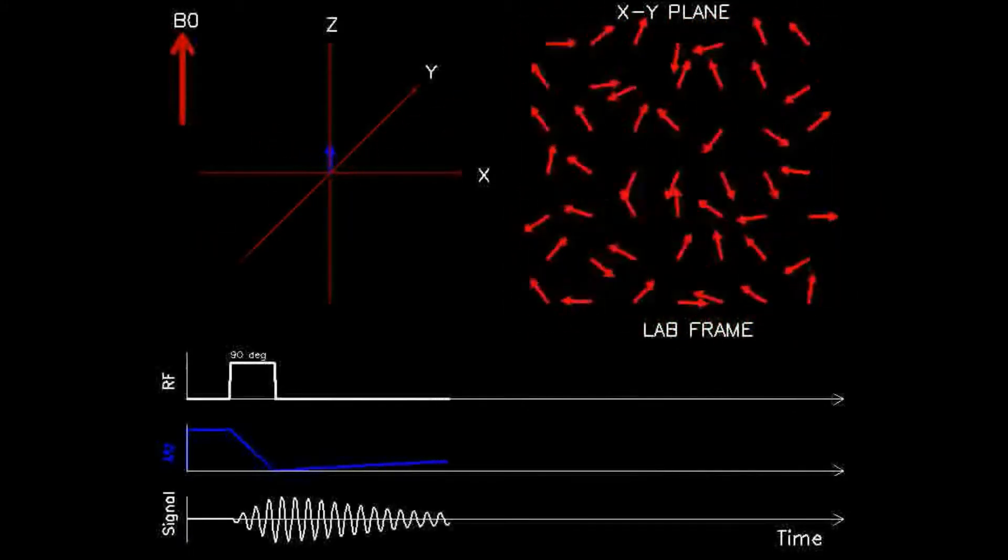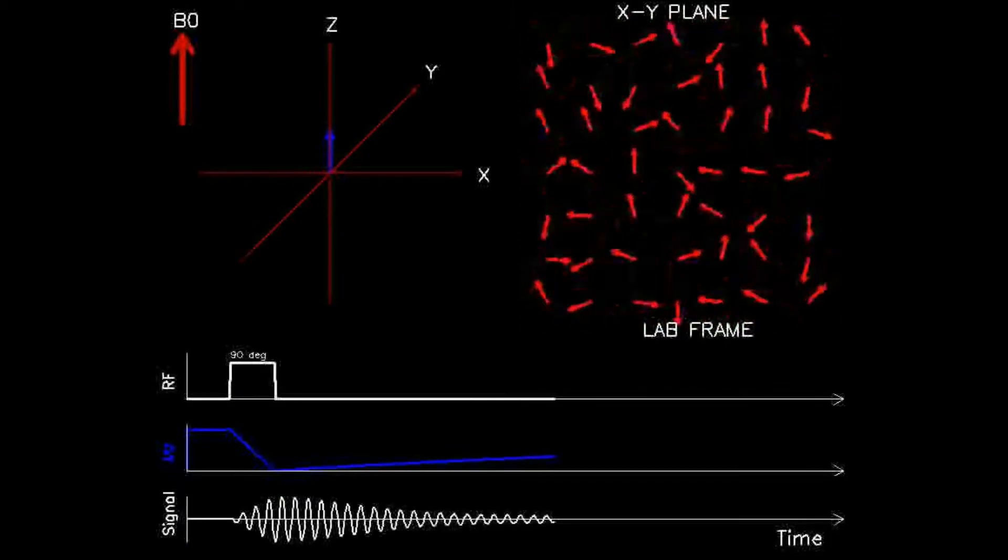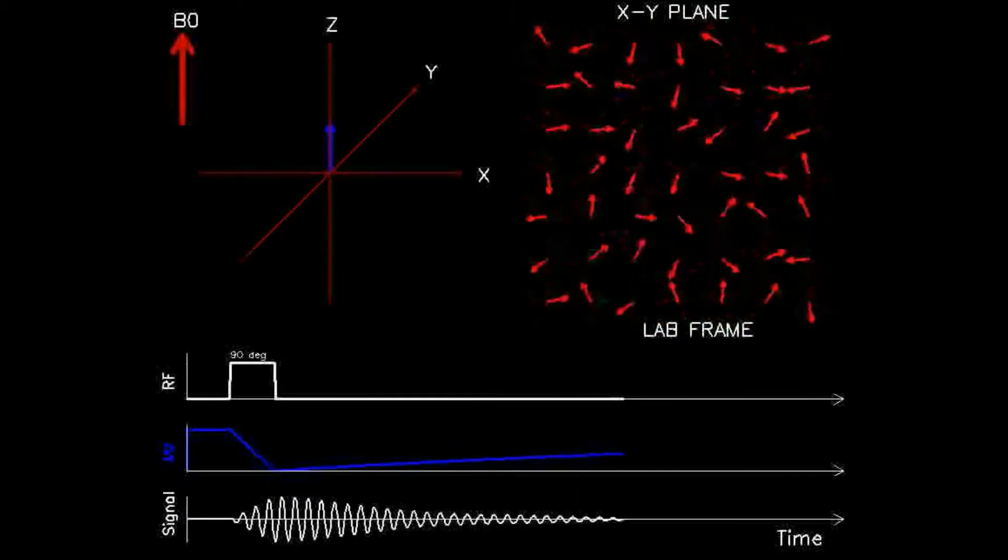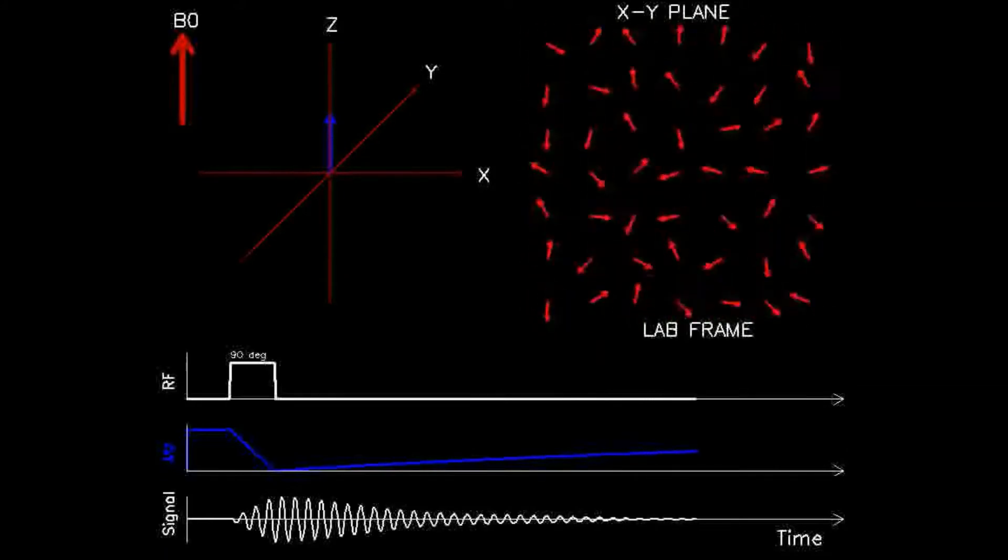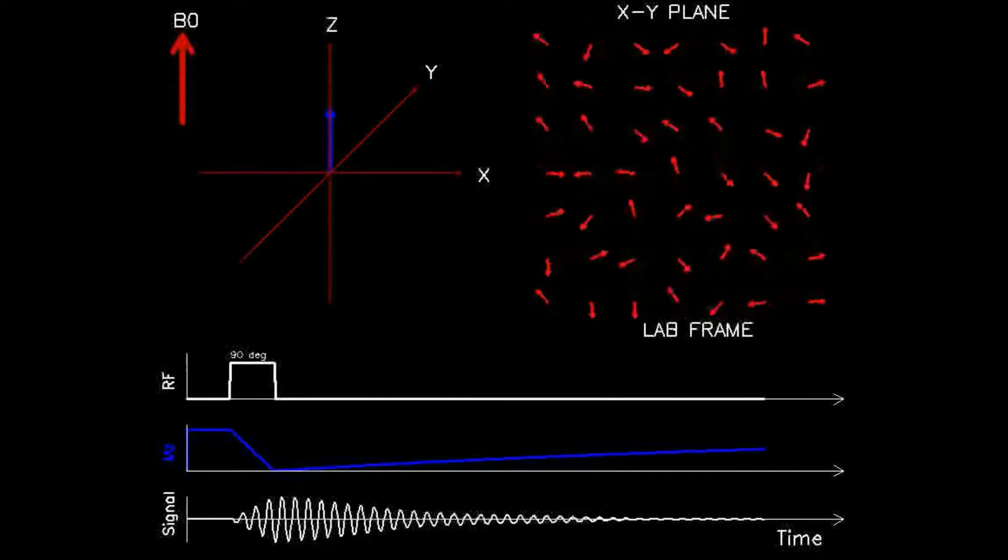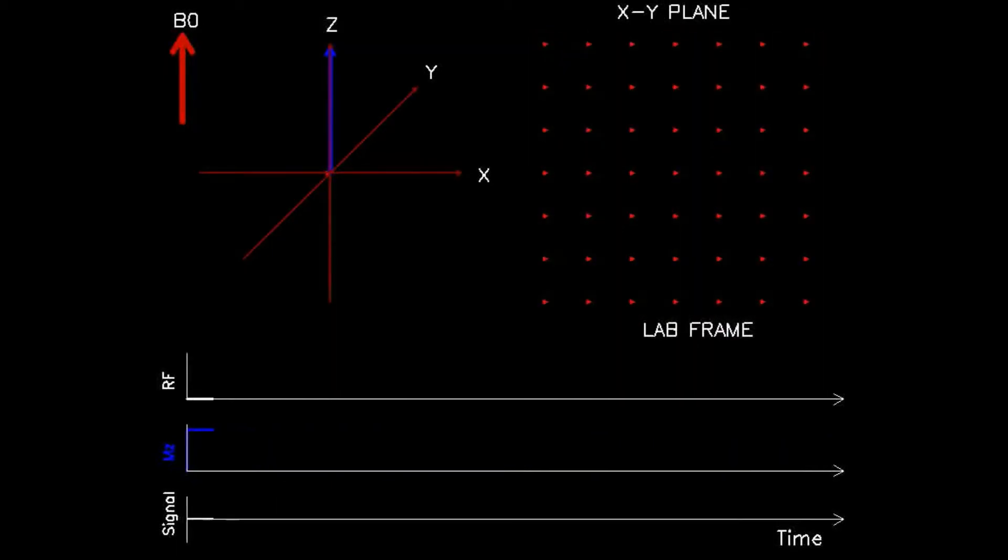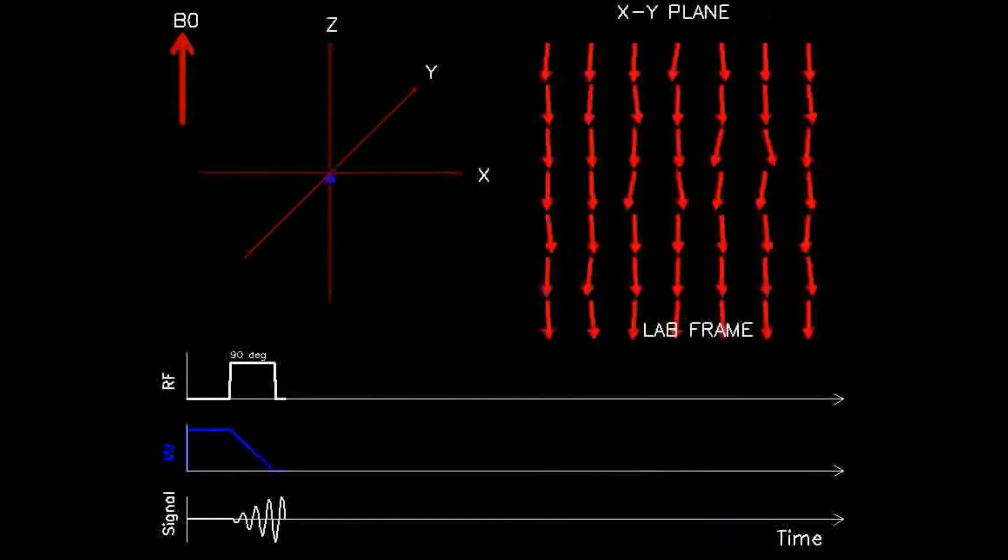Unlike the previous animations which demonstrated spin lattice relaxation, spin-spin dephasing, and field inhomogeneity relaxation individually, this animation combines the effects of all three mechanisms of signal decay in one animation.